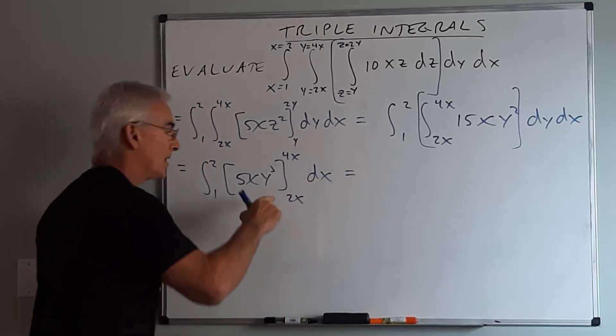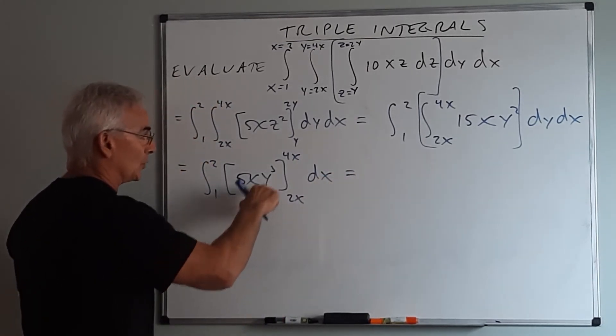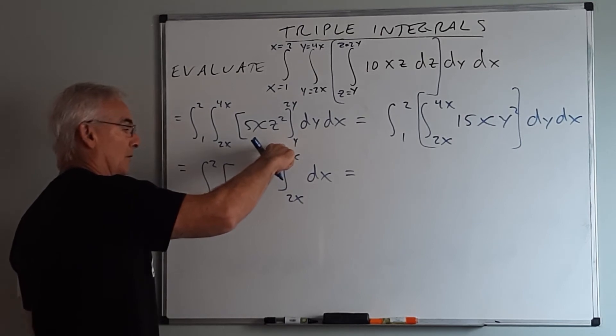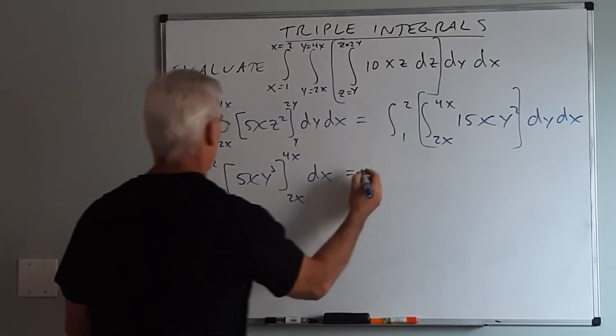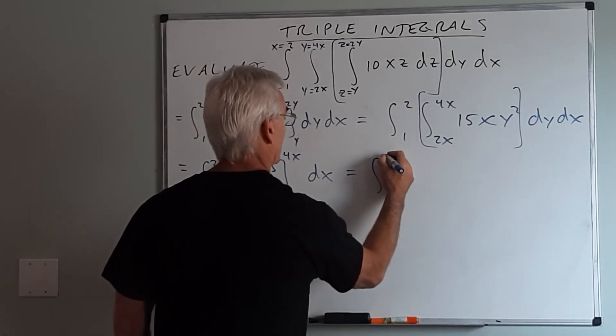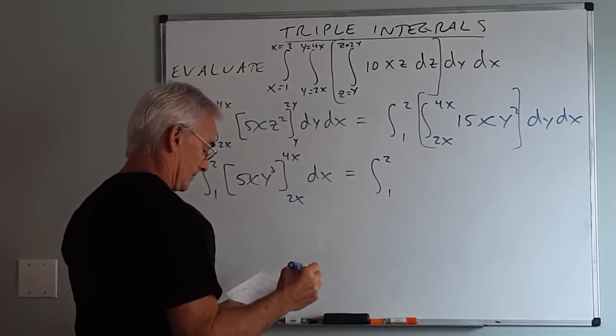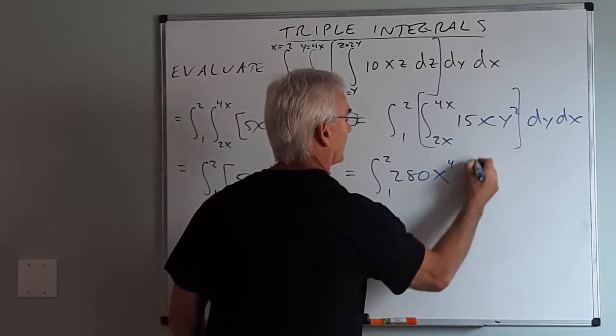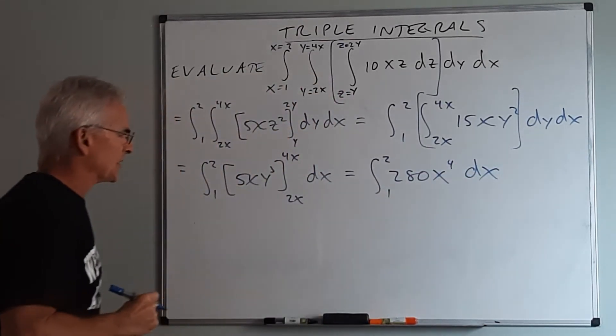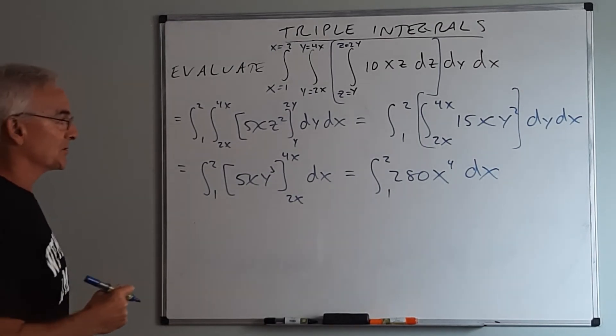Then once again, when I evaluate y cubed at 4x, I'll have the cube of 4x minus the cube of 2x and then times 5x. That will give me 1 to 2 of the quantity 280x to the fourth dx. This is just simple algebra and evaluation at this point.